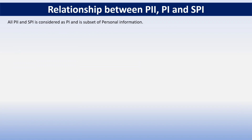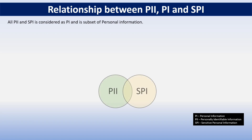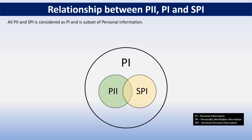Now let's understand the relationship between PII, SPI, and personal information. All PII and SPI are considered as PI — all personally identifiable information and sensitive personal information are considered as personal information. If there is any information which identifies you, that is your personal information. If there is any sensitive information — whether it identifies you or not — that is your sensitive personal information, like your political beliefs. PII and SPI are both subsets of personal information.